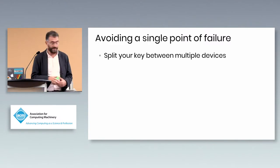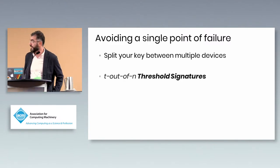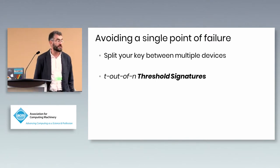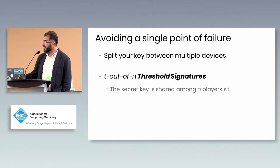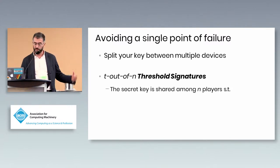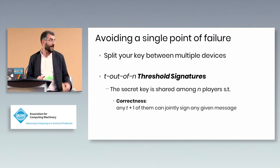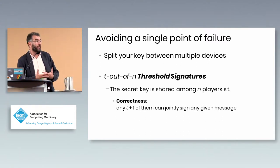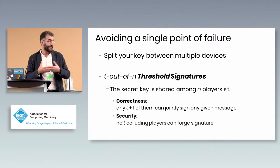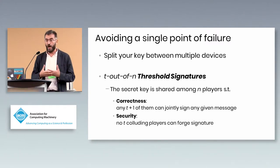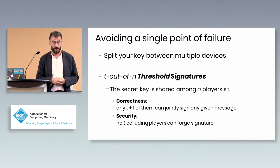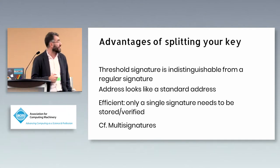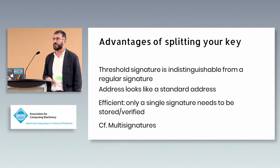To avoid a single point of failure, you take your key and split it into multiple devices. The standard way to do this is to use what we call threshold signatures, where we split the key among n servers such that at least t+1 of them can cooperate to produce a signature, but t or fewer cannot sign and should have no information about the key at all.